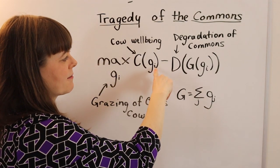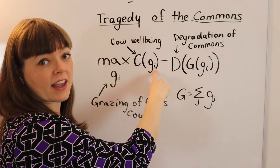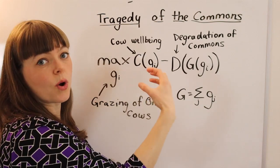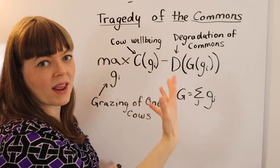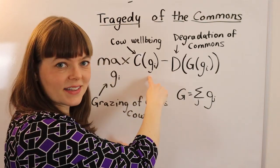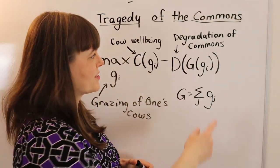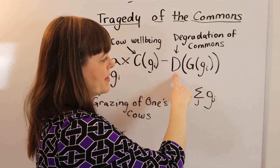The cow's well-being is a function of how much they let their cows, the subscript I is one individual's cows, how much do they let their cows graze in the common ground? That's the benefit. The cost, of course, is the degradation of the commons.